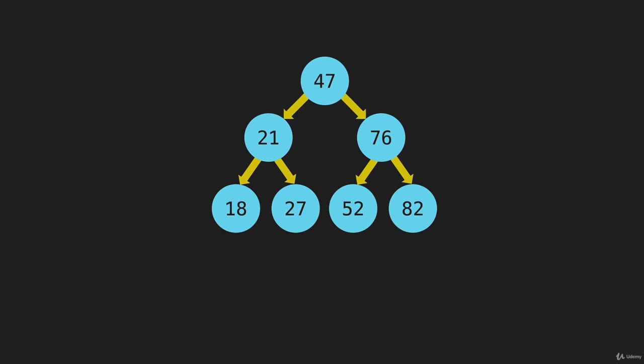One of the common ways of doing this is we start at the top node, then go to the next line and do the 21 and the 76. Then we go to the next line and go across here. This is called breadth first search.